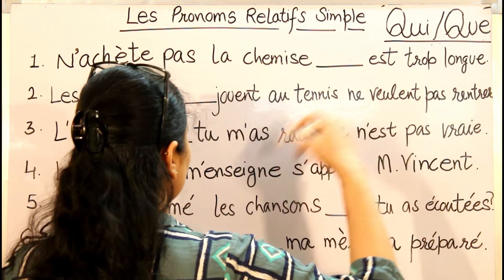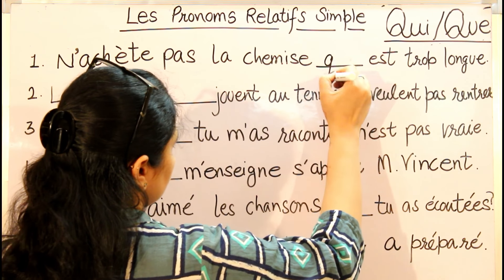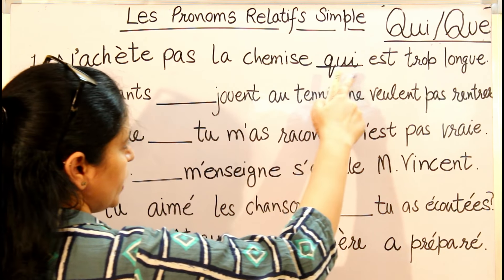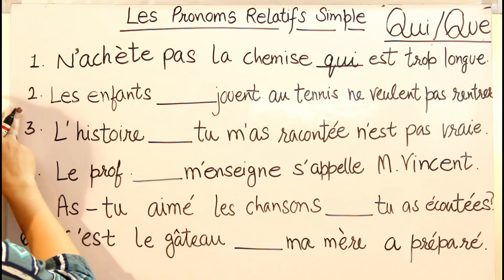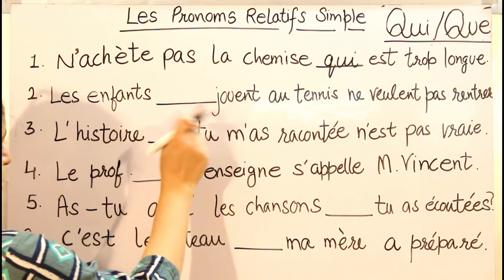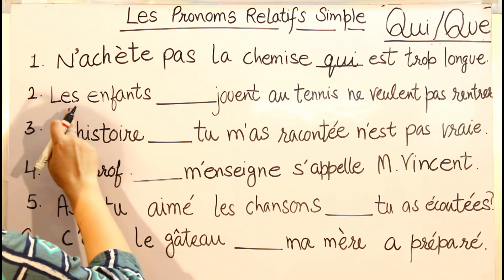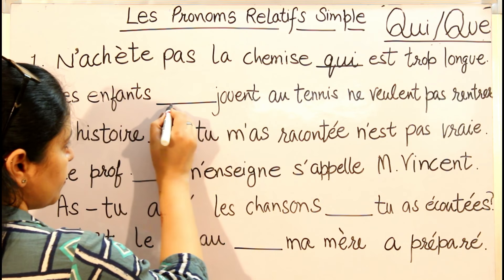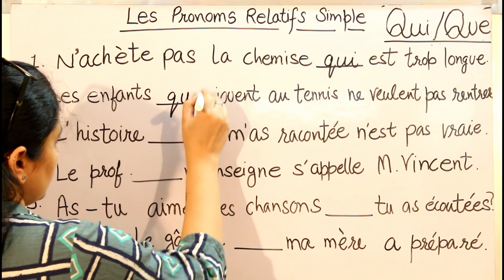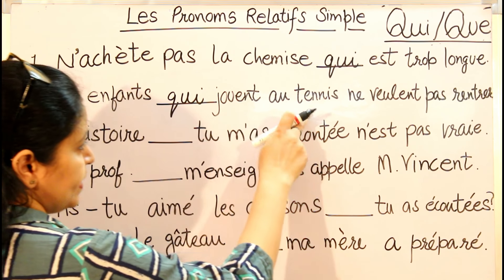Now let's see more sentences. First: 'N'achetez pas la chemise [blank] est trop longue' — don't buy the shirt which is too long. After the blank we have a verb, so we write QUI. Second: 'Les enfants [blank] jouent au tennis ne veulent pas rentrer' — the children who are playing tennis don't want to come back. Again, after the blank there is a verb and we are talking about the subject, so: 'Les enfants QUI jouent au tennis ne veulent pas rentrer.'